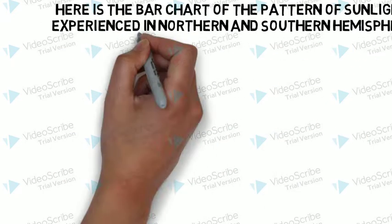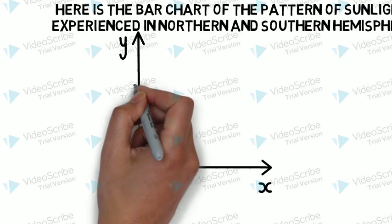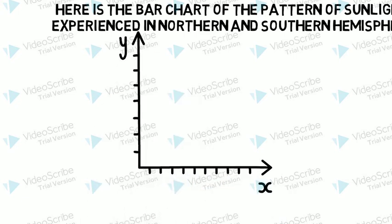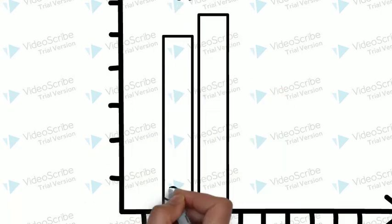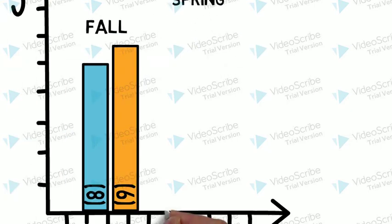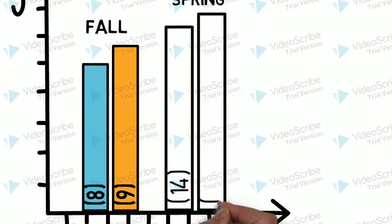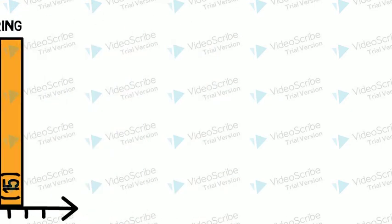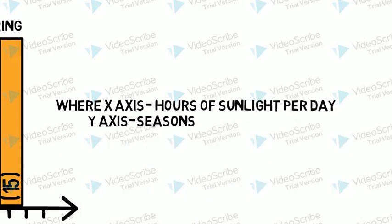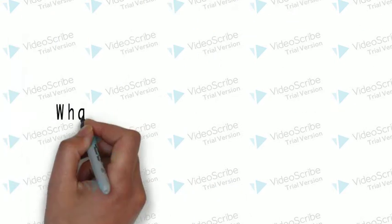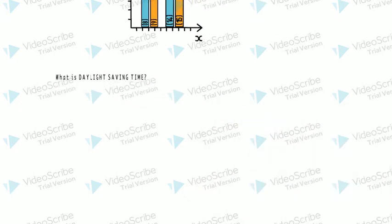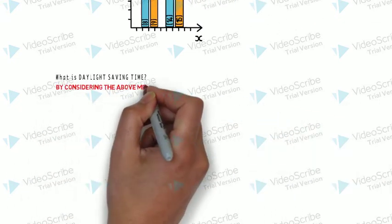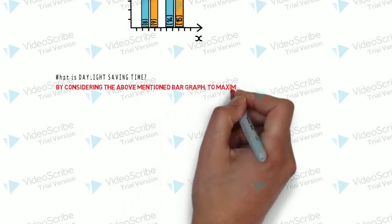From the bar chart, we can see that fall experiences about eight to nine hours of sunlight per day in general, while spring experiences about fourteen to fifteen hours of sunlight per day in general. Now let's see what is meant by daylight saving time and what it is generally called, by considering the above-mentioned bar graph.